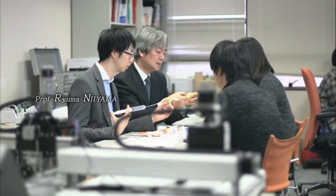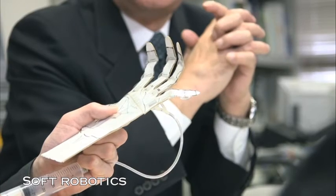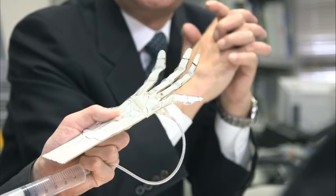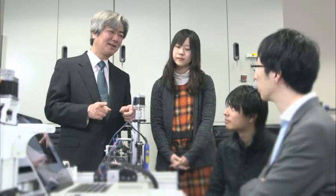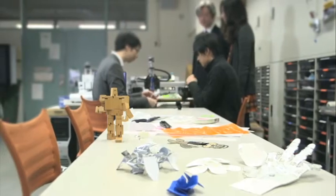His group also conducts research on soft robotics, where soft, deformable materials like paper or plastic are used instead of metal. The goal for the research is to help bring robots into all aspects of our daily lives.